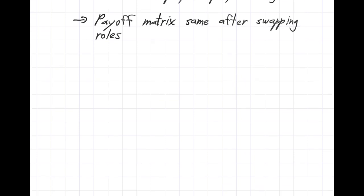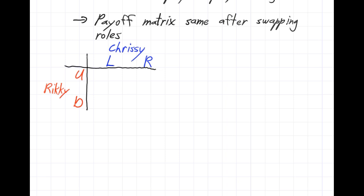Let's say we've got two players: Ricky and Chrissy. Ricky has two options — he can play U or D — and Chrissy can play L or R. The payoffs very generally are just variables. For Ricky we'll use Roman letters: A, B, C, and D. For Chrissy we'll use Greek letters: alpha, beta, gamma, and delta. You might notice I didn't put beta next to B and gamma next to C — that will become clearer later.